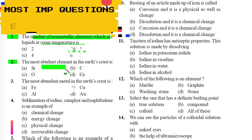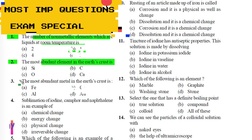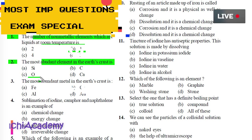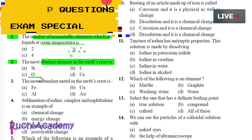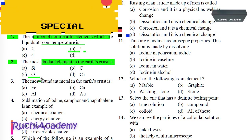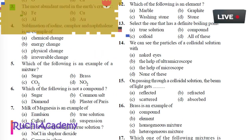Question 2: The most abundant element in the earth's crust is: A) Silicon, B) Carbon, C) Oxygen, D) Calcium. Answer is Oxygen. Oxygen at 46.6% is the most abundant element in the earth's crust.